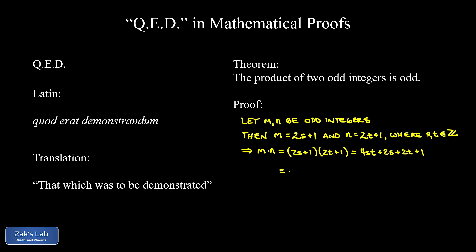Now we notice that the first three terms are all divisible by two. So we're going to factor a two out of that. So we have 2 times the quantity (2ST + S + T) plus 1.